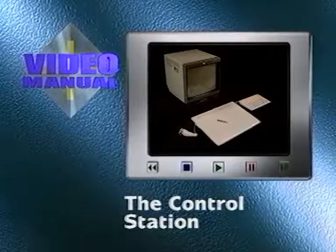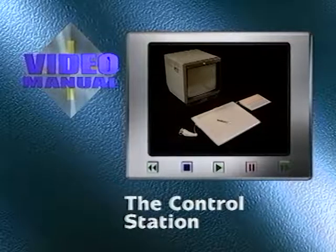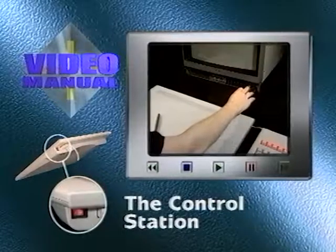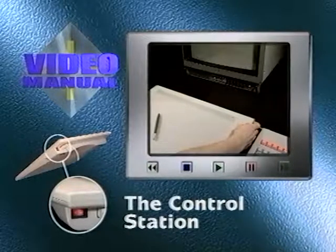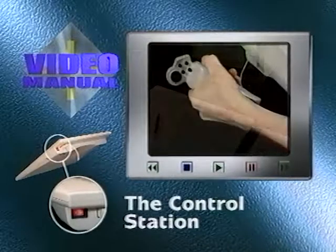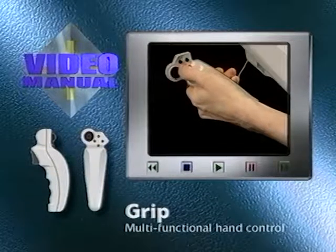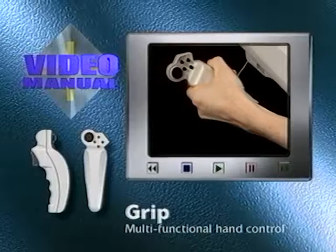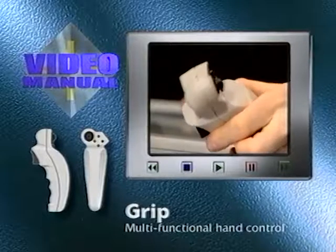The control station comprises a monitor, digitising tablet and pen, a keyboard and a hand unit. Only the monitor and tablet need to be switched on. The switch for the tablet is located to the rear on the right-hand side. The grip is a small hand unit which provides additional control over some of the system's functions. It comprises four control buttons, a multi-directional thumb switch and a trigger switch.